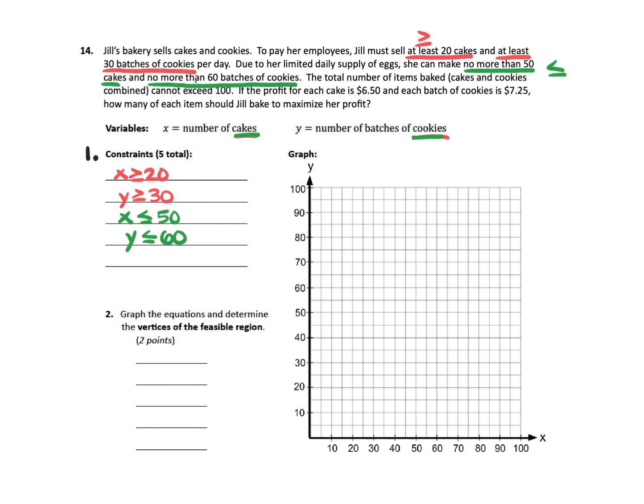Now there's one final constraint here. The total number of items baked, cakes and cookies combined, cannot exceed 100. That means if you add up the number of cakes with the number of cookies, it cannot go over 100. So that's going to be X plus Y less than or equal to 100. And that again is the combined total. So now that we have our constraints, we are ready to go and make our graph.